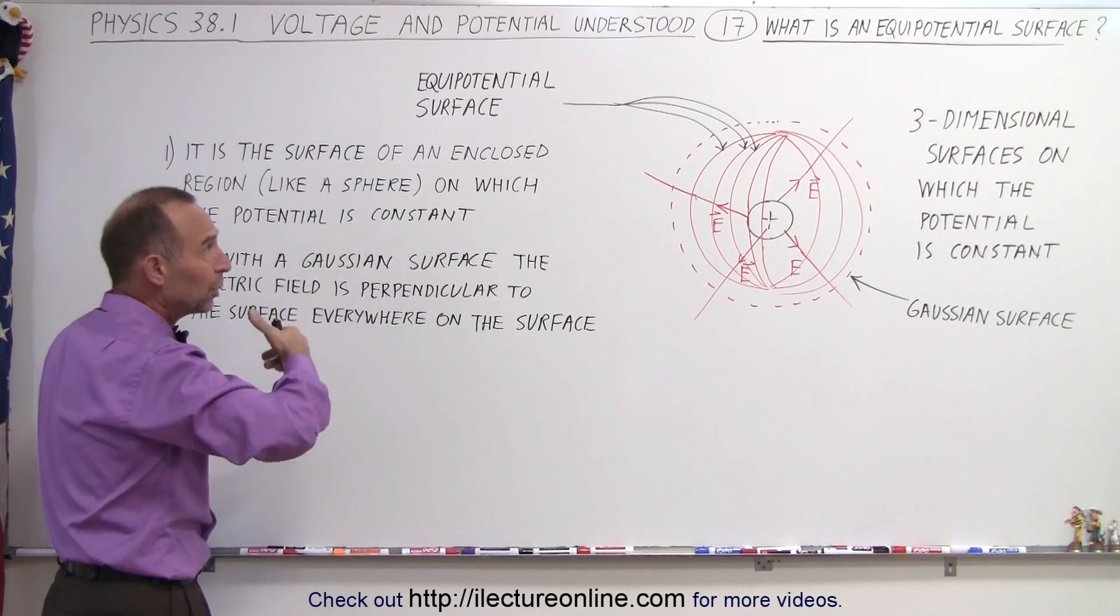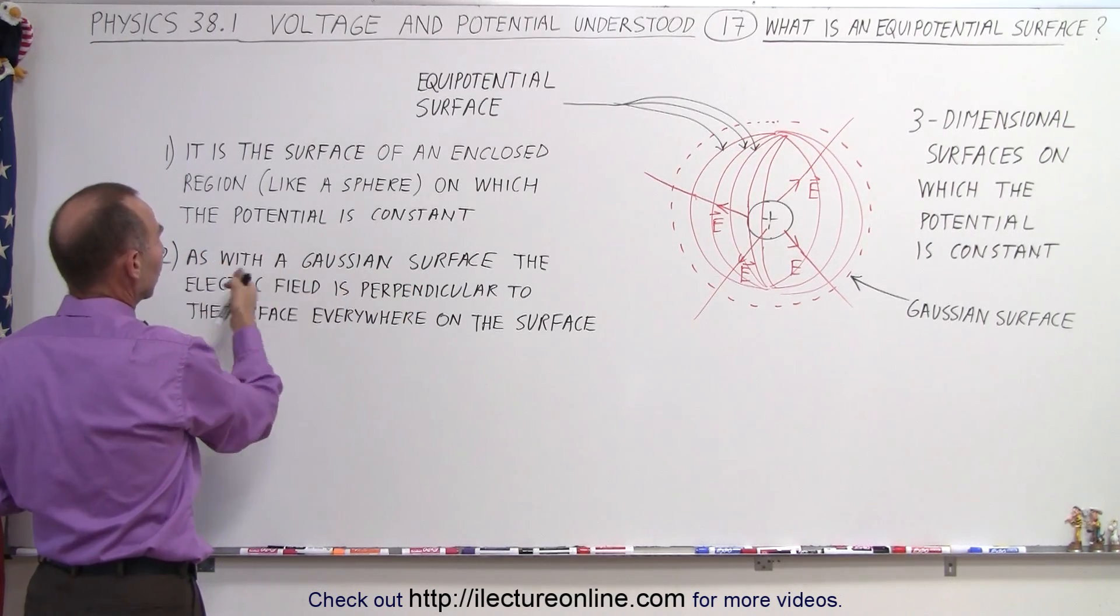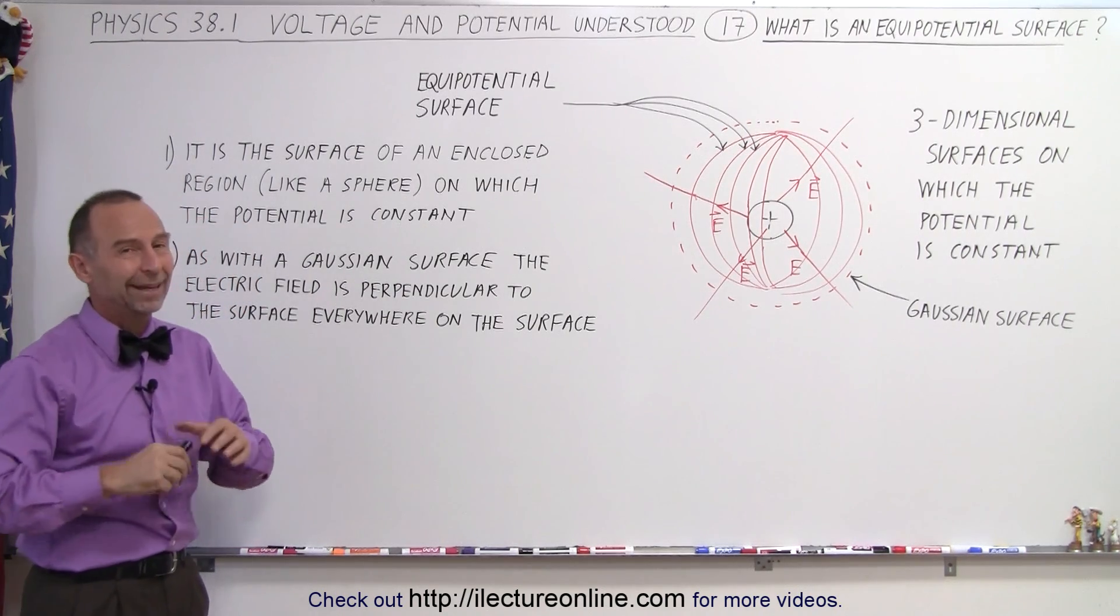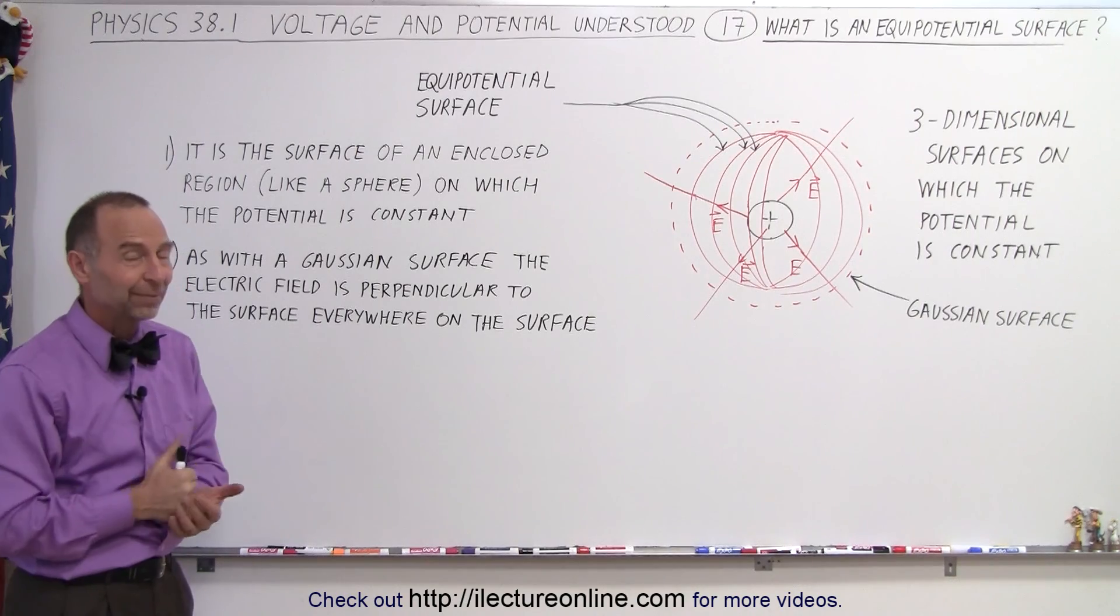As with a Gaussian surface the electric field is perpendicular to the surface everywhere on that surface, and that's a good way to think about an equipotential surface. And there it is.